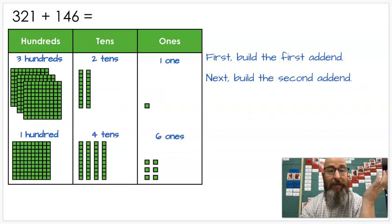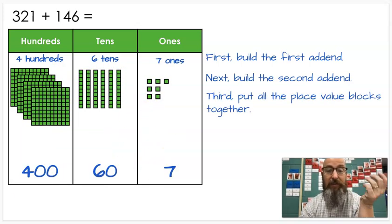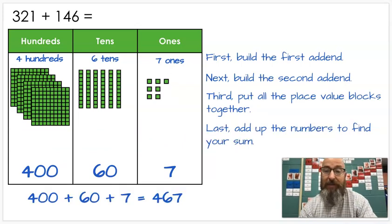And in case you're wondering, are you sure that's correct? Of course it is. I have three here, plus one is four, two and four is six, and one and six is seven, which is exactly what I got right here. And then I add those numbers up. And this is the last thing. You add them up. 400 plus 60 plus seven is 467, which means 321 plus 146 is 467.